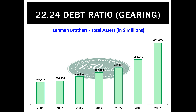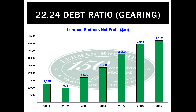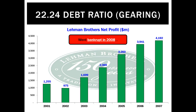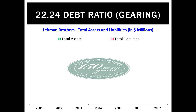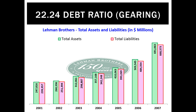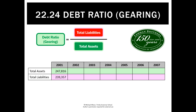A really good real-world example of this is Lehman Brothers. Their total assets by 2007 were $691 billion — obviously a very big company. Their net profit was $4.2 billion in the year before it went bankrupt and it had grown significantly over the previous seven years. But one of the reasons why it went broke relates to the debt ratio or gearing. In 2001 there were $247 billion of assets but also $239 billion of liabilities, and that pattern continued through 2002, 2003, 2004, 2005, 2006, and 2007 — basically every year, total assets were almost entirely financed by liabilities. So liabilities were being used to purchase all of their assets.